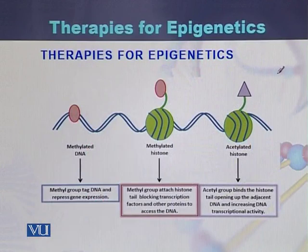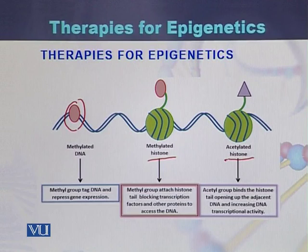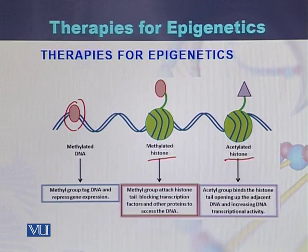Therapies for epigenetics involve different phenomena: methylation of the DNA, methylation of the histones, and acetylation of the histones. Methylation of the DNA can be reversed with certain medicines, and acetylated histones can also be modified. Methylated DNA can be converted into non-methylated, and acetylated histones can be converted into deacetylated, and vice versa.